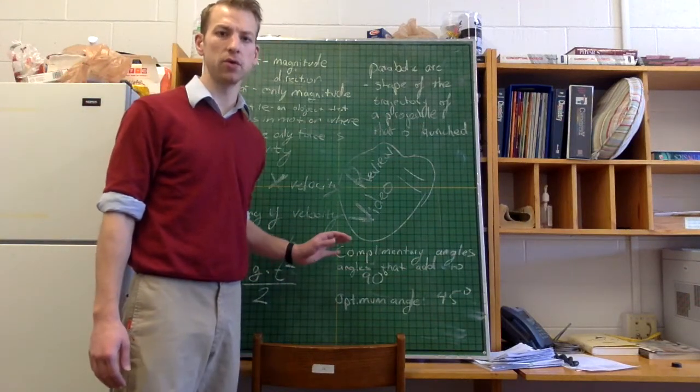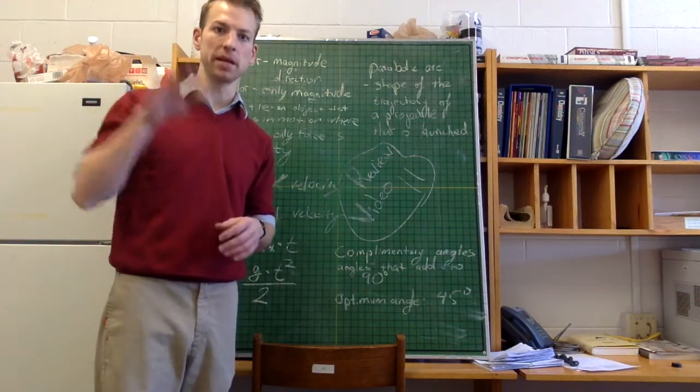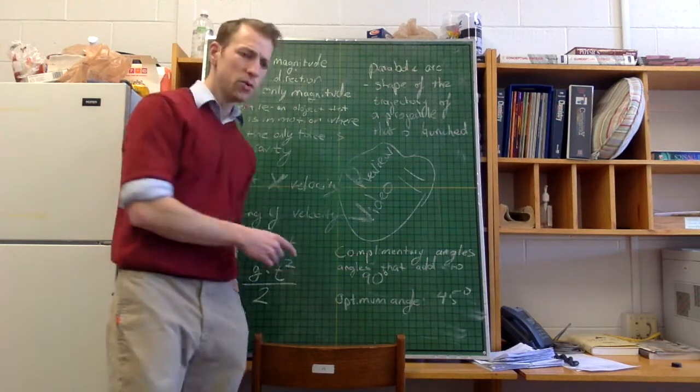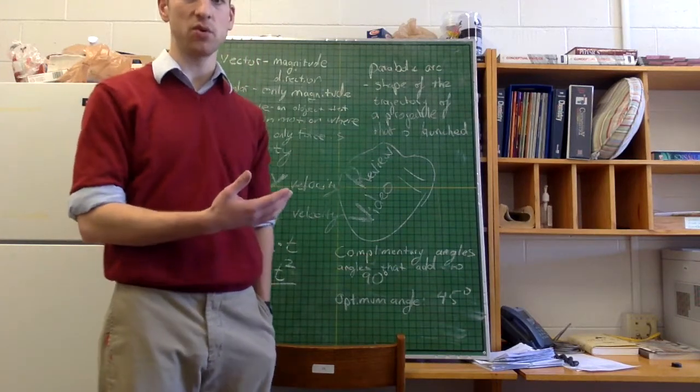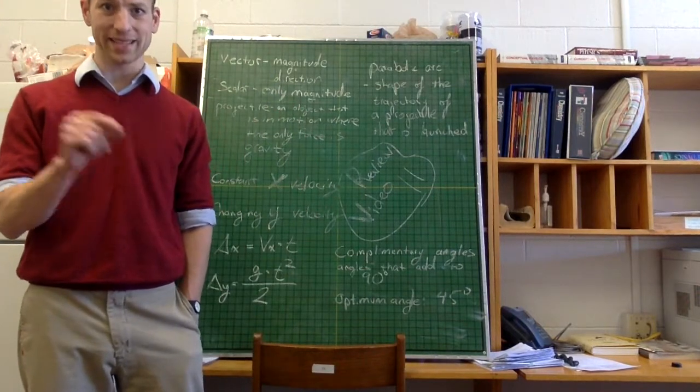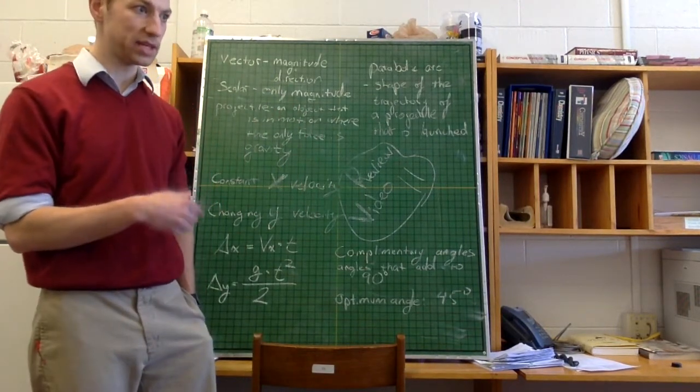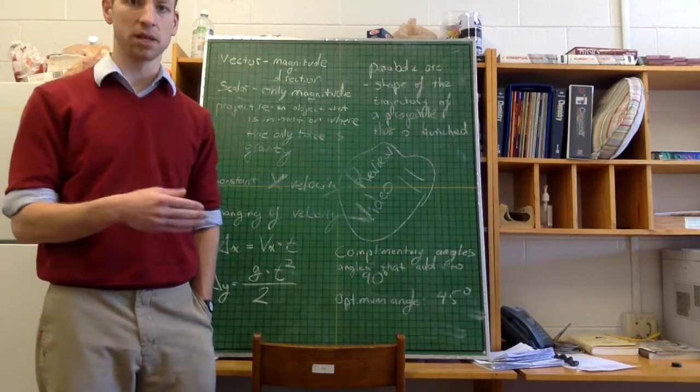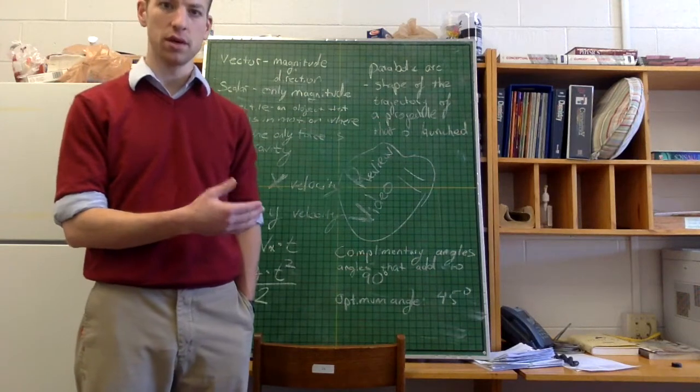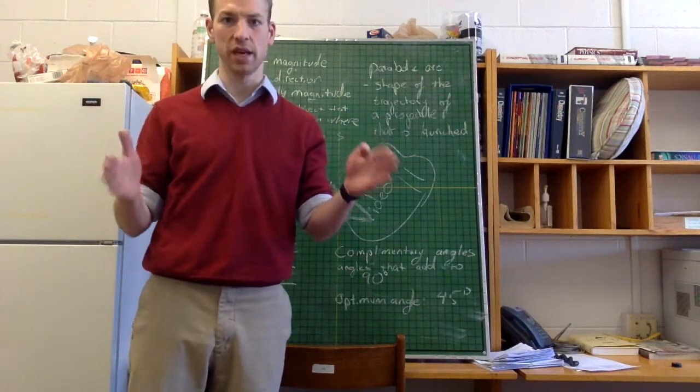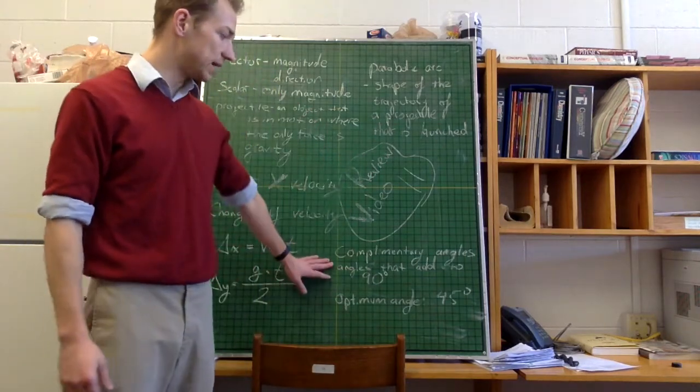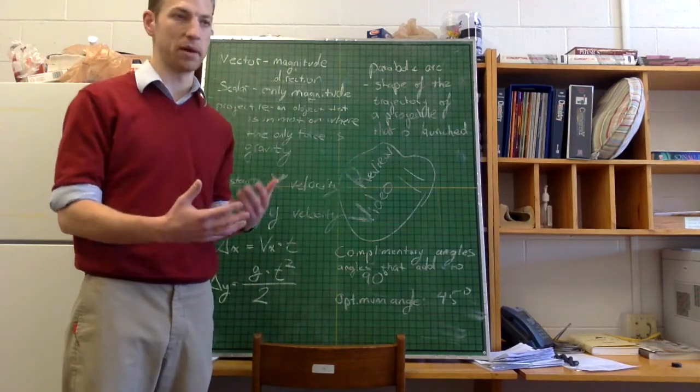Lastly, we talked about projectiles that are launched up, as opposed to straight out horizontally. We found that something interesting happened when you had two complementary angles. Two complementary angles are angles that, when added together, equal 90 degrees. So something that is launched at 70 degrees and something that is launched at 20 degrees will actually both have the same range. And range is that horizontal change in position, that horizontal displacement.